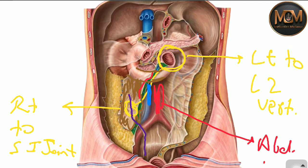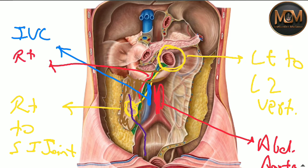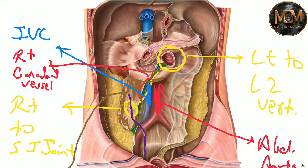To summarize, the structures crossed by the root of mesentery are: abdominal aorta, inferior vena cava (IVC), right gonadal vessels, right psoas major muscle, horizontal part of duodenum, and right ureter.